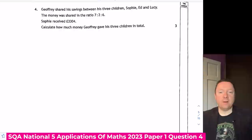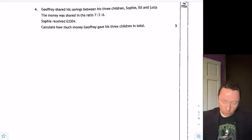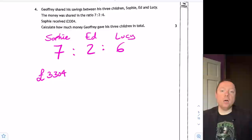National 5 Applications of Maths 2023 Paper 1 Question 4. Geoffrey shared his savings between his three children, Sophie, Ed and Lucy. The money was shared in the ratio of seven to two to six. Sophie received £3,304. How much did Geoffrey give his three children in total? So there's a ratio of seven to two to six. That's Sophie, Ed and Lucy. And we know that Sophie's share was £3304 and her share's worth seven parts. So I need to divide by seven to get one part and then I can times by the whole total or find Ed's and Lucy's and add it all together.